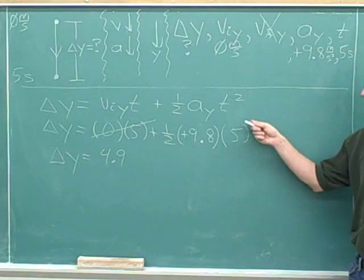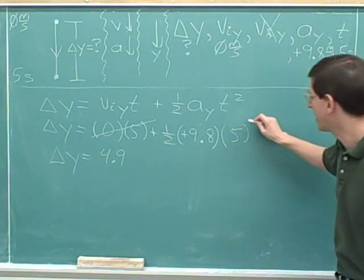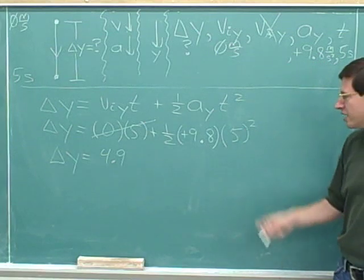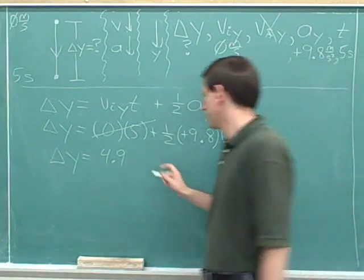One half times 9.8 is 4.9. It looks like I forgot to put the square here. That's definitely going to mess us up, so let's go back. It's very important to see that the time here is supposed to be squared. Well, 5 squared is 25.